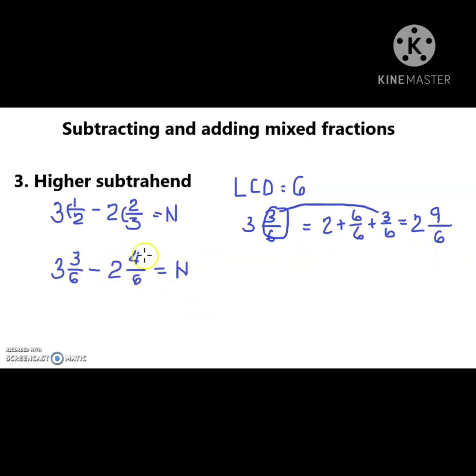Ngayon i-minus na natin itong subtrahend. 2 and then 4 over 6. So 2 minus 2 is 0, and then 9 minus 4 is 5. Then denominator natin ay 6.